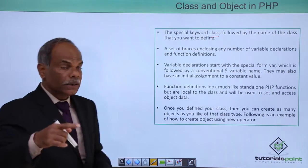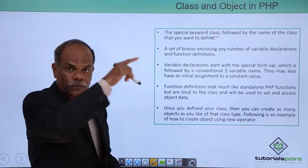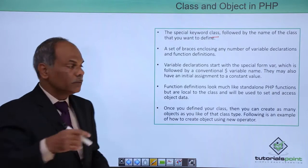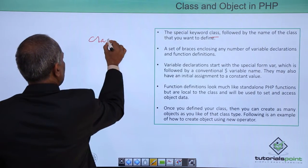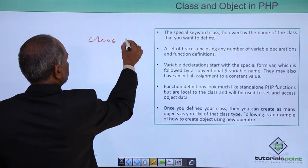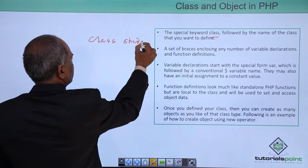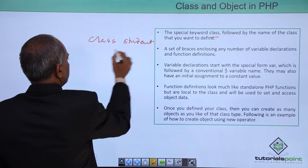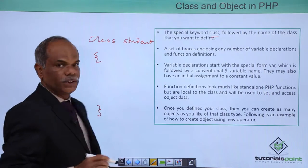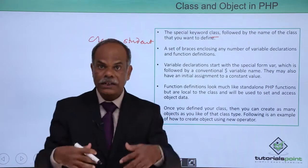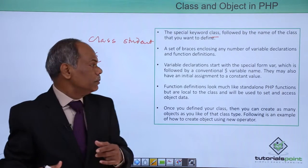In order to create a class, there is a special keyword in PHP called class itself. The class keyword must be followed by a user-defined name, because the class is a user-defined data type — you can name it as per your requirement. The name of the class is immediately followed by a set of opening and closing braces. For example, class student should have a pair of braces inside which the definition of the class will be.